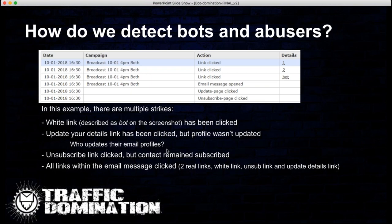In this detection example showing multiple strikes: an 'update details' link was clicked but the profile wasn't updated, the unsubscribe link was clicked but the contact remained subscribed, and all links in the message were clicked. Basically, this bot is programmed to click everything. It'll go through a funnel link in someone else's autoresponder and click everything, then journey on. This isn't just inside your account — if you send to someone who's bought traffic, it'll go through their account and into someone else's, spreading like wildfire.